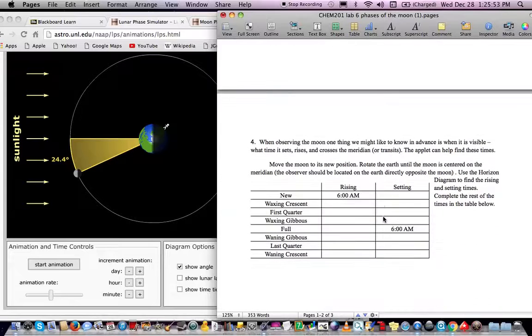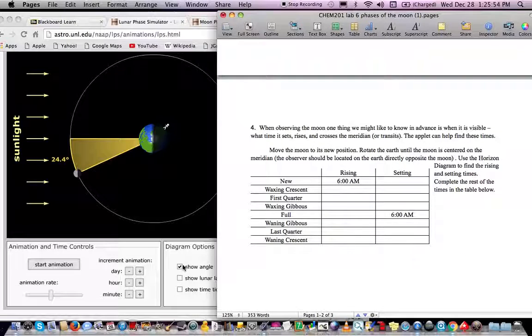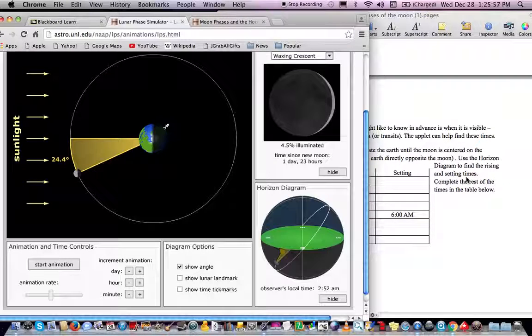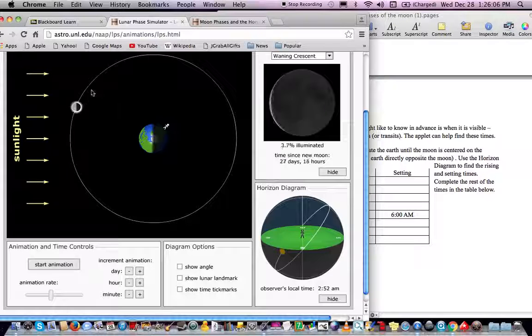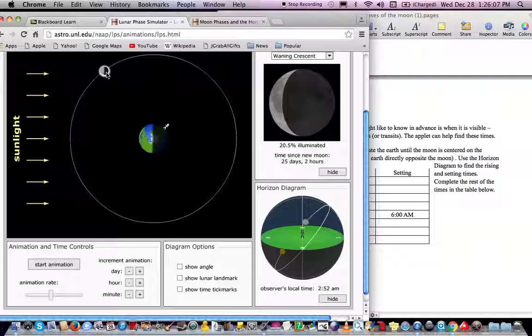And then you can figure out rising and setting times. And I would ask you here to use the horizon diagram. Here's the horizon diagram here, but I want to show you some observations you could make with regard to moon position and what this little dude here sees. Now you can actually grab this little dude and move him around. And here's what I want you to realize.